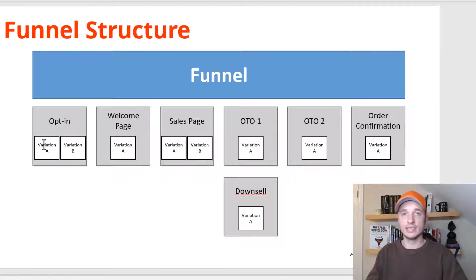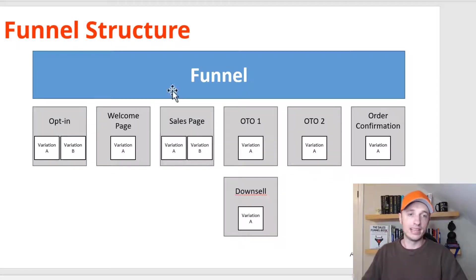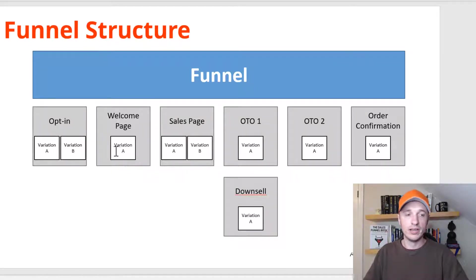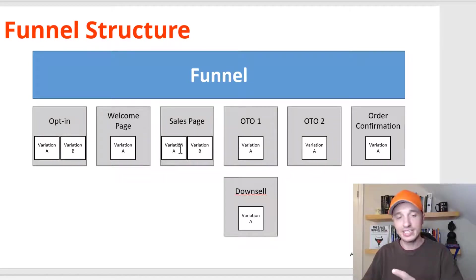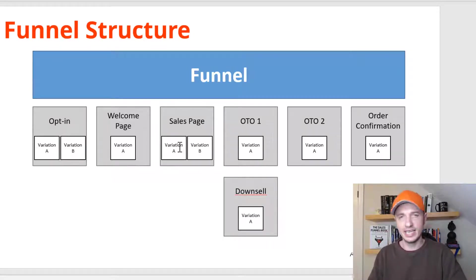So there are three different areas where you can change a page path: at the funnel setting, at the step settings, and each variation has its own unique page path you can set. Whatever you set at the variation level is going to be the page path people see in their address bar, so the variation page path is probably the most important one.